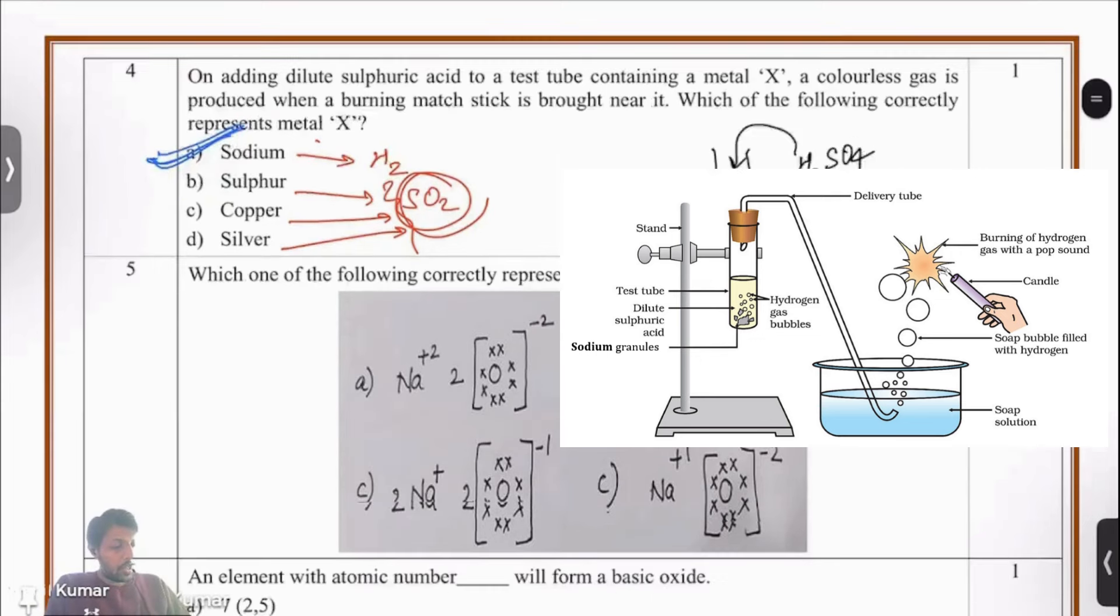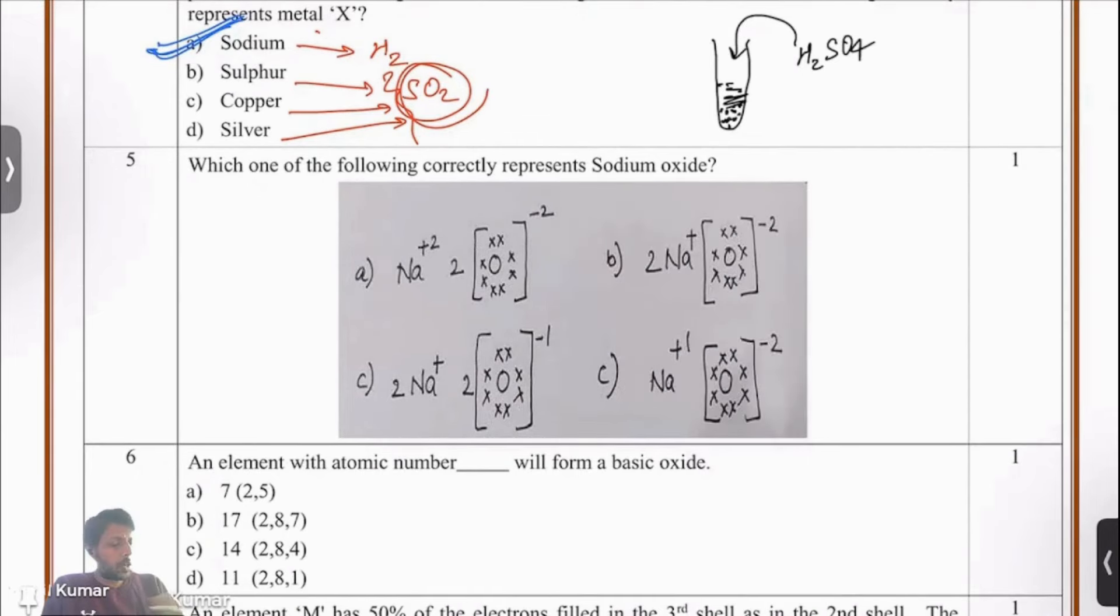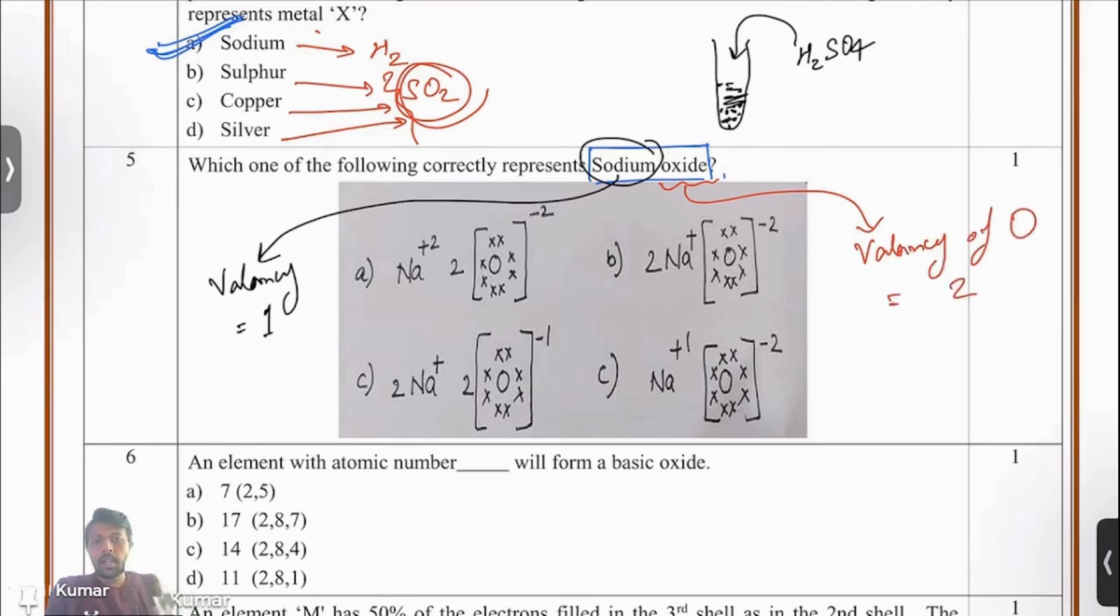We have been given electronic configuration of some atoms and we have to find out whether sodium oxide is represented by any of the four options. First of all, what is the valency of sodium? It's 1 - it's a group 1 element. What is the valency of oxygen? It's a group 6 element and has valency 2. The valency of sodium is 1 and the valency of oxygen is 2. If you want to write it with signs, it's minus 2 and plus 1.